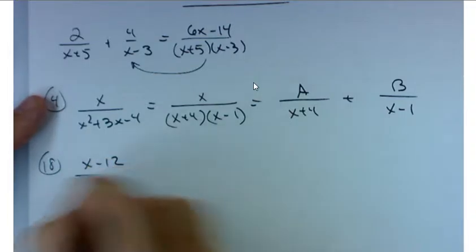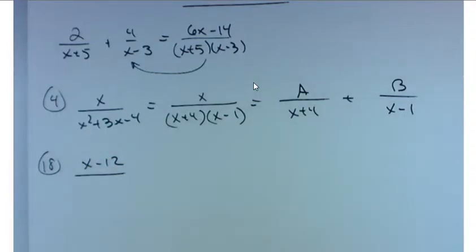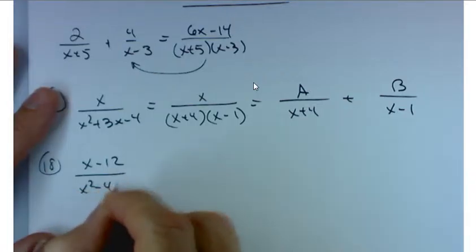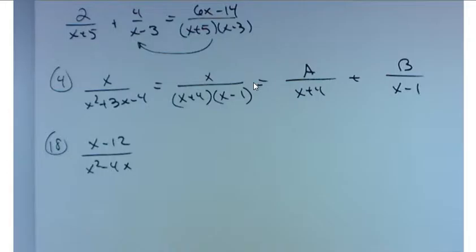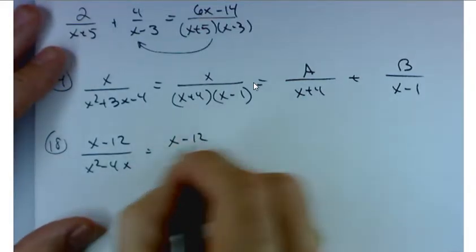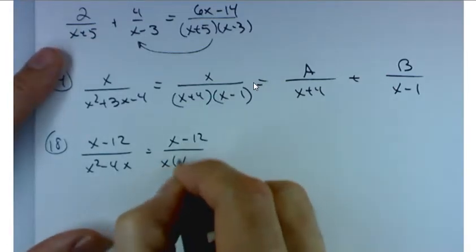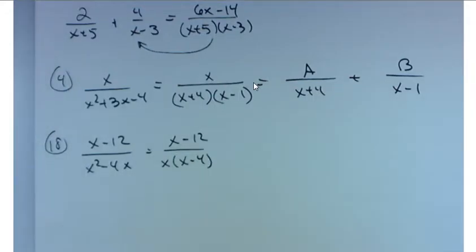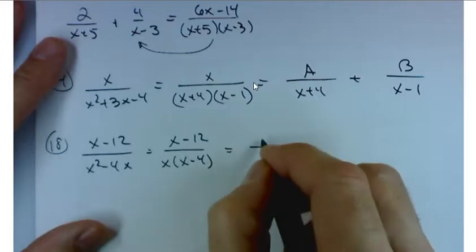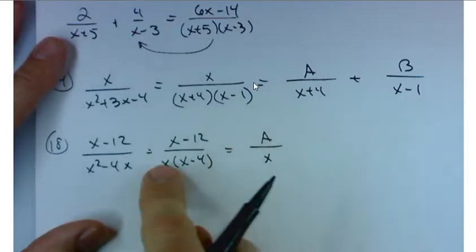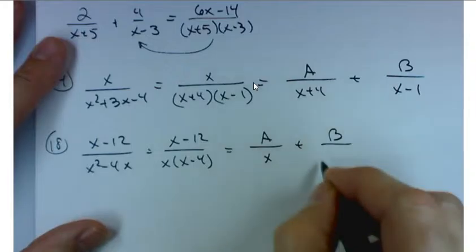Problem number 18. x minus 12 over x squared minus 4x. So kind of like problem number four, the first thing we have to do is factor the denominator. So this is x minus 12. How does the denominator factor? Thank you Victoria, x times x minus 4. Now for each of these linear factors here I have to have a term on the right hand side of the equation. So it's going to be A over x plus B over x minus 4.